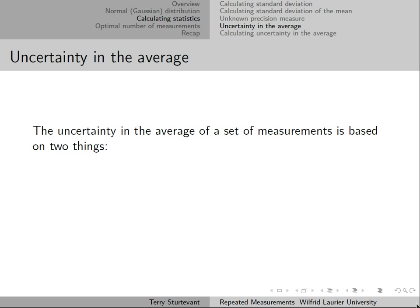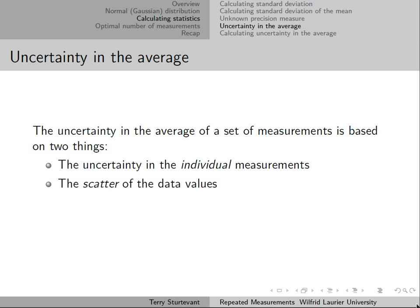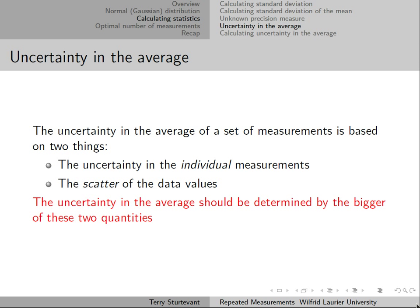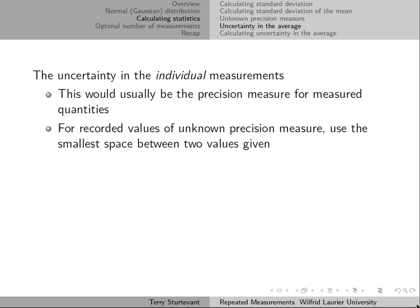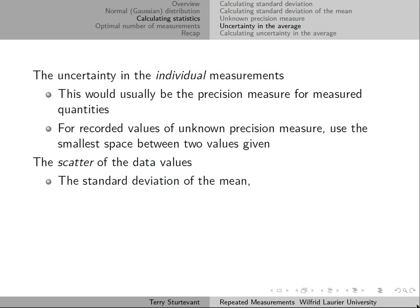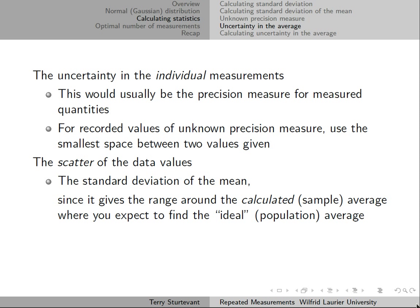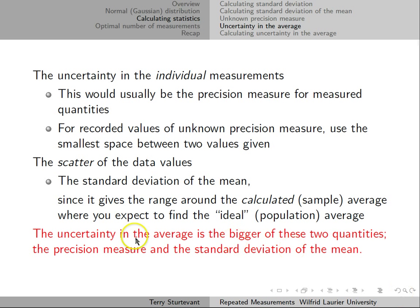The uncertainty in the average of a set of measurements is based on two things: the uncertainty in the individual measurements, and the scatter of the data values. Whichever is bigger should determine the uncertainty in the average. The uncertainty in individual measurements is usually the precision measure — if unknown, use the smallest spacing between given values. The scatter of the data values is given by the standard deviation of the mean, which represents the range around the calculated average where you expect to find the ideal average.